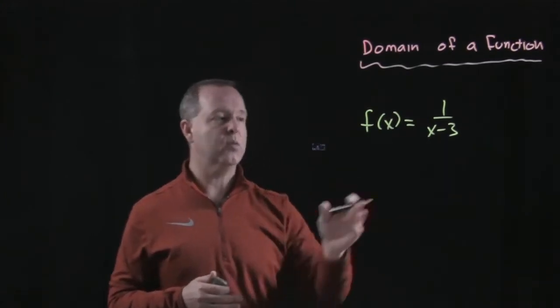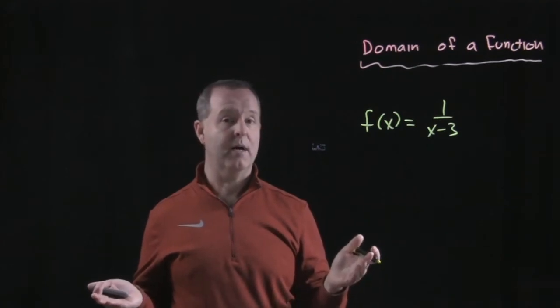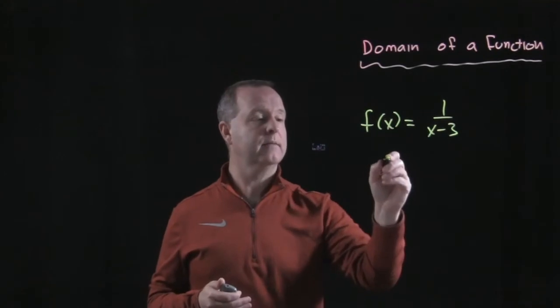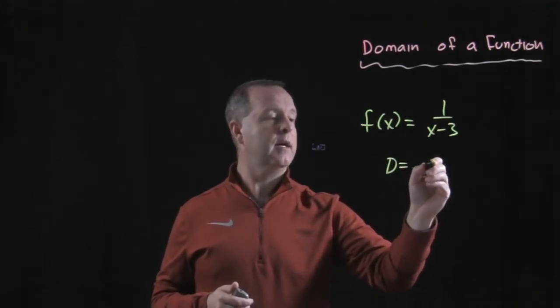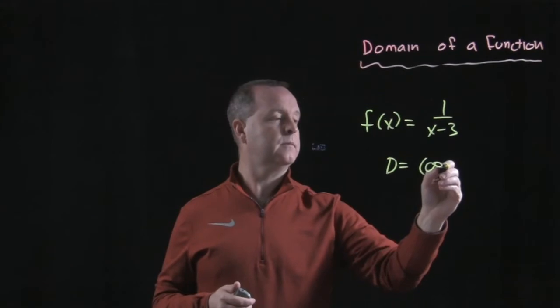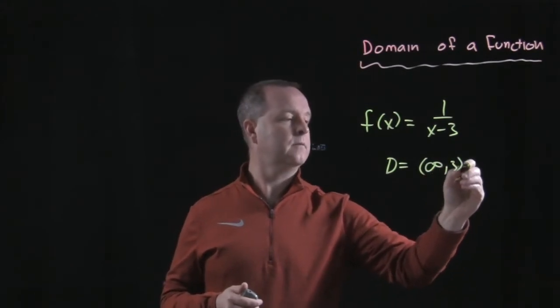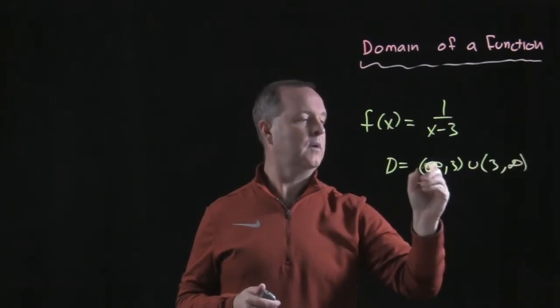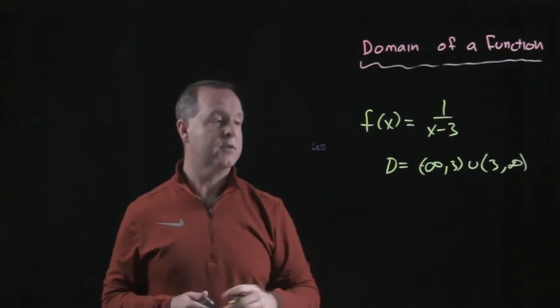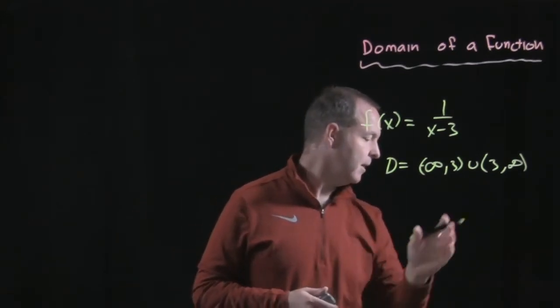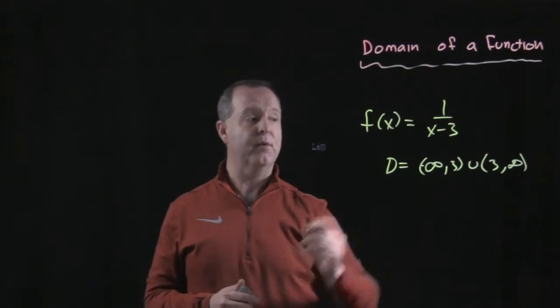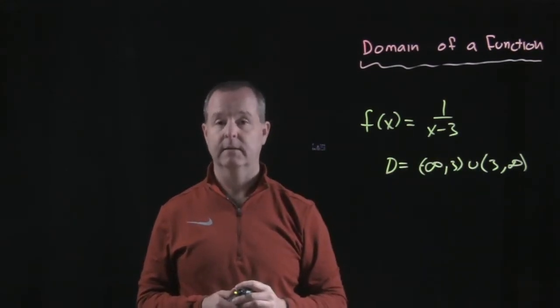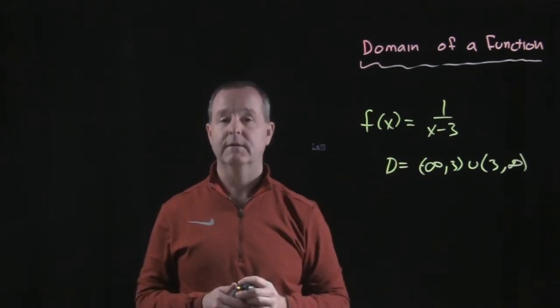So again, an example on this one: we understand that every value in the real numbers works except for 3. So we could have a domain that equals the union of negative infinity to 3 and 3 to positive infinity. And notice I don't have a hard bracket around the 3, because 3 itself is not part of the domain.